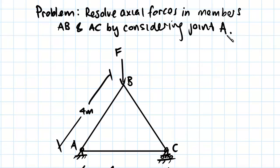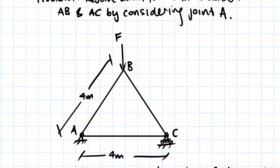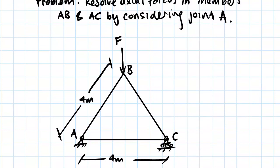So what we're going to be doing in this question is we're going to be looking at this joint here, joint A, and we're going to be looking at the members going into and out of joint A.